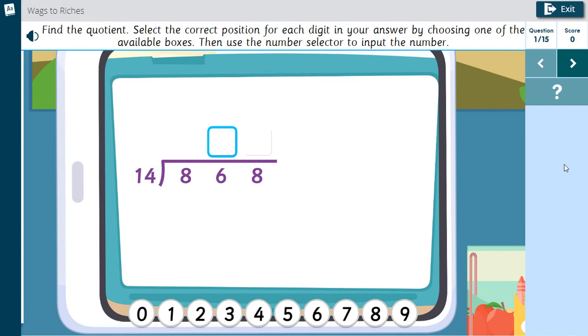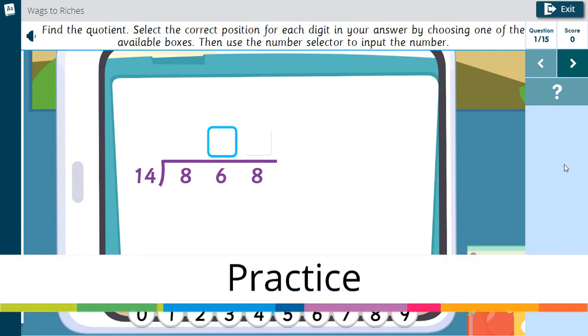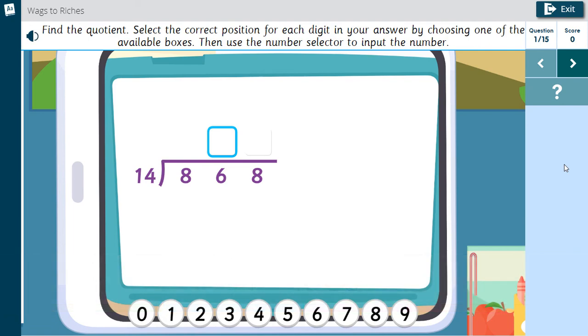Find the quotient. Select the correct position for each digit in your answer by choosing one of the available boxes. Then, use the number selector to input the number.